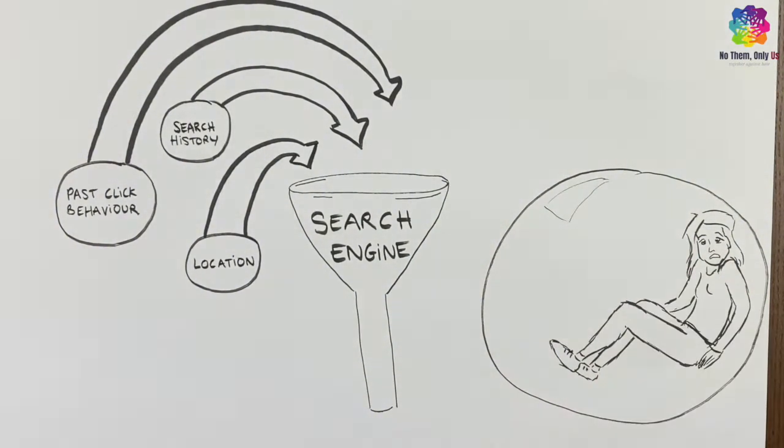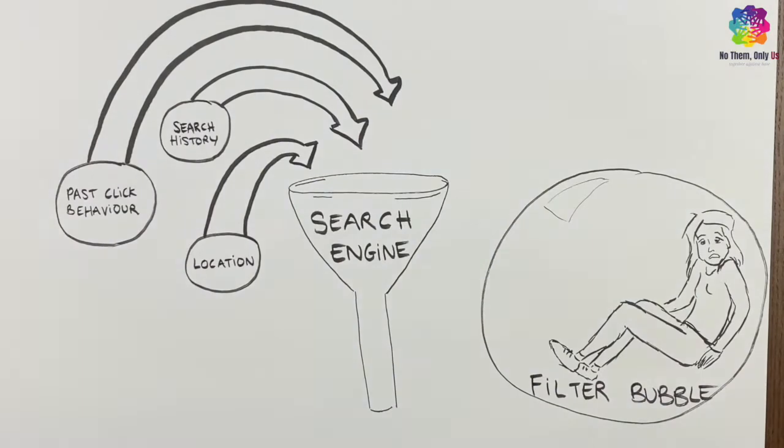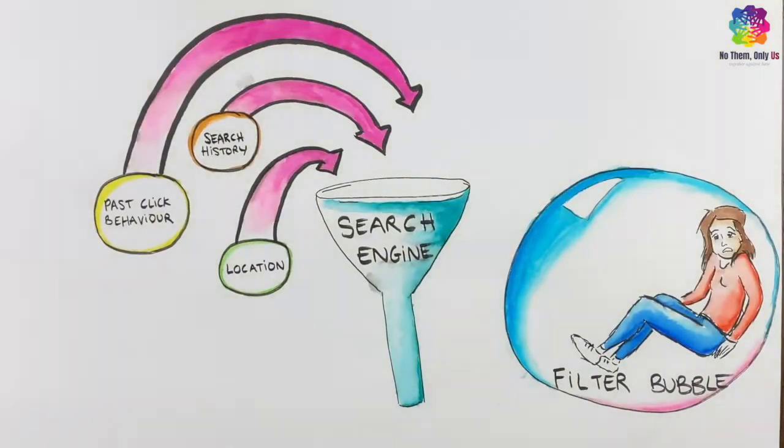In the end, because of the algorithm, your feed will only ever show you what you want to see and things you are likely to agree with. This is what we call a filter bubble. The algorithm filters out information that we may not like or agree with.